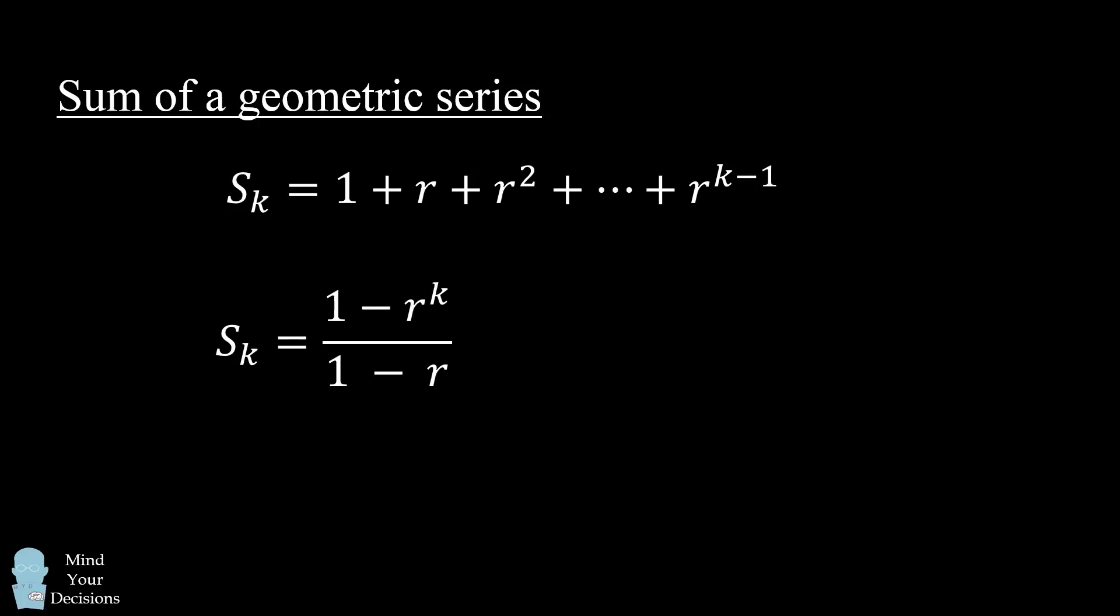Sometimes it will be convenient to multiply the numerator and denominator by negative 1, and that's the formula I use in this video, which is r to the power of k minus 1 all over r minus 1. Now, one more note.